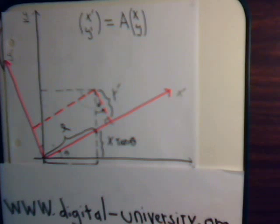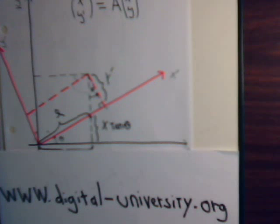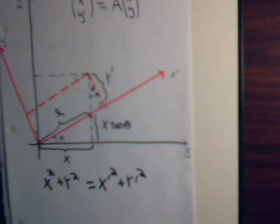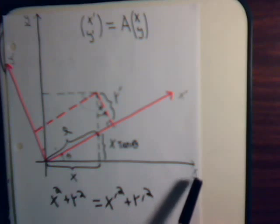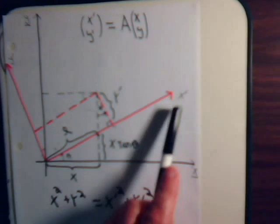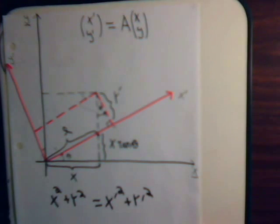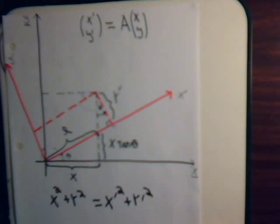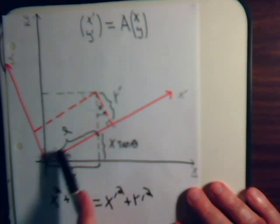By an angle theta. So as a reminder, here we have an x-axis and an x-prime, y-prime axis, and they're related by some matrix, as we've been discussing now ever since video number 27.